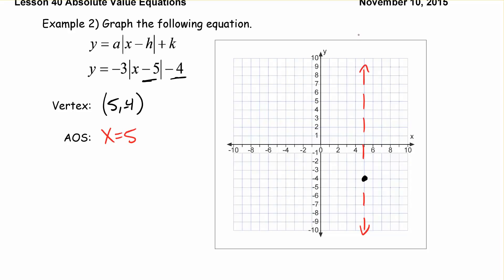So we've got an AOS of x equals 5. We've got a vertex. I'm going to write this on the other side. A vertex of 5 negative 4. And then we have our slope. Our A value is negative 3 here. So that means we're going to go down 3 and right 1. Now because of our axis of symmetry, we could also go down 3 and left 1. Down 3 and right 1. Down 3 and left 1. And we're staying the same distance away from our axis of symmetry.